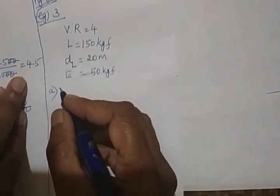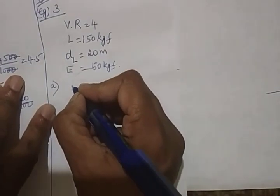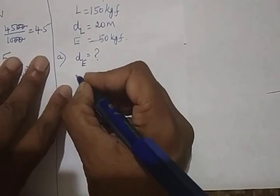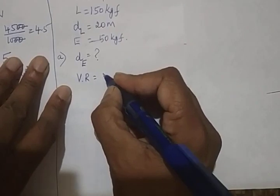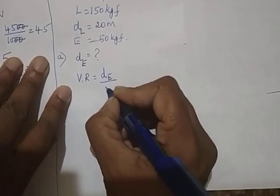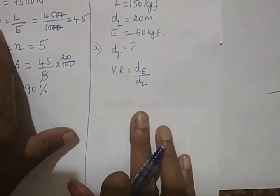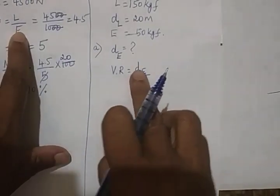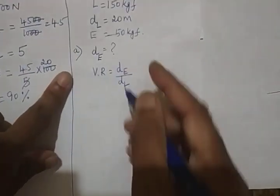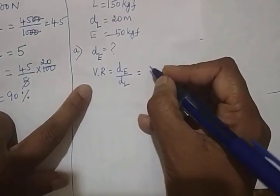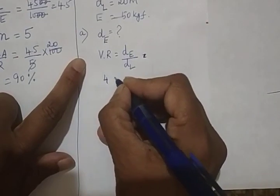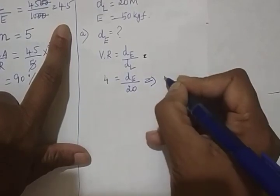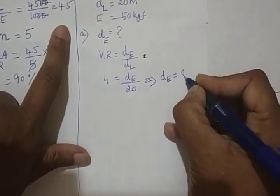Let's start solving the question. Distance moved by the effort, DE, is the question mark. Now you know that velocity ratio formula is DE by DL. I told you to remember like this. MA, in MA's formula, load will be in the numerator. Load upon effort. In VR's formula, distance traveled by effort will be in the numerator. Load in the denominator. Don't confuse yourself. So VR is given as 4. DE we have to find. And DL is 20. So DE will be 4 into 20, 80 meter.